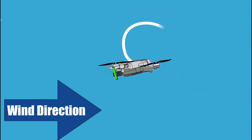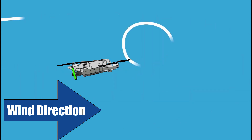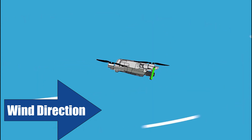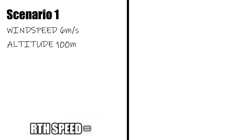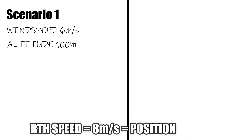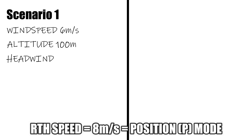What is headwind and tailwind? A headwind is where the aircraft is flying against or into the wind direction. A tailwind is where the aircraft is flying with the wind direction. Let's assume the wind speed is constantly at 6 meters per second at an altitude of 100 meters. The default auto RTH speed is about 8 meters per second, same as P mode — regardless of whether you are in sport or Cine smooth mode when RTH is initiated. When auto return to home is initiated with a headwind flying back to home point, the aircraft speed will become only 2 meters per second.